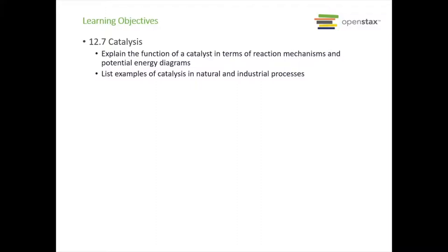Welcome back, guys. We are on our last section of chapter 12, section 12.7, Catalysis. In this section, we're going to explain the function of a catalyst in terms of reaction mechanisms and potential energy diagrams, and list examples of catalysis in natural and industrial processes.